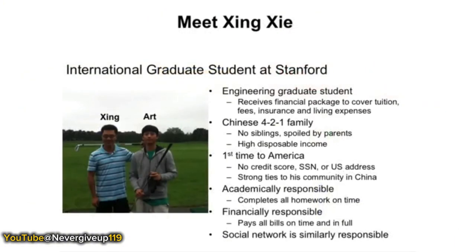One startup was trying to understand how to find foreign students at universities. They put together an archetype: meet this student, here's who they are, here's their family, and this is their first time in America. Because it was about providing financial services to foreign students, they understood something about the customer's credit score, Social Security number, U.S. address, whether they were responsible academically and financially, and whether their social network was responsible.